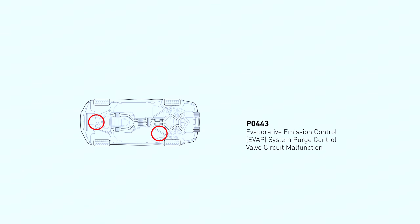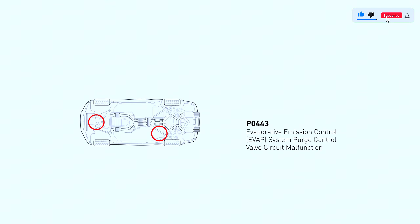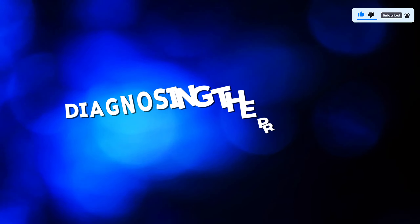Trouble code PO443 stands for Evaporative Emission System Purge Control Valve A Circuit, and it indicates a problem with the EVAP system purge valve or control circuit. Common problems that can trigger this code include bad purge valves, problems with the purge valve circuit, and issues with the PCM.